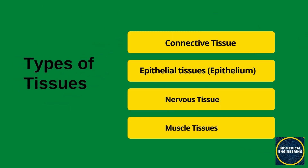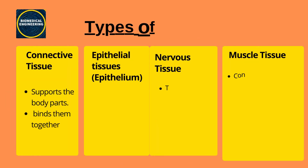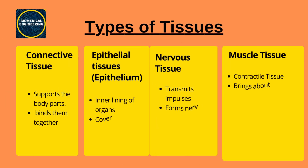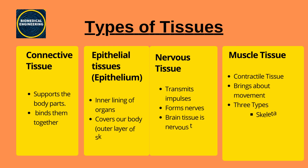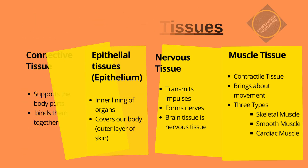The human body is made up of four types of tissues: connective tissue, epithelial tissue, nervous tissue, and muscle tissue. Connective tissue provides support and protection for the body. Epithelial tissue lines the surfaces of organs and body cavities. Nervous tissue transmits signals throughout the body. Muscle tissue allows for movement.